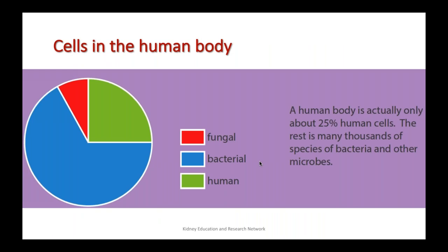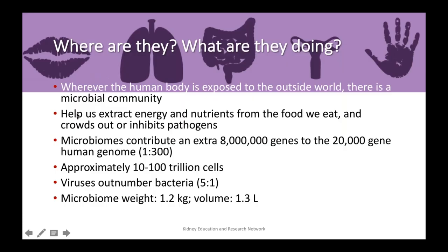It might come as a surprise that a human body is actually about 25% — or in fact much less than 25% — human cells. The rest consists of many thousands of species of bacteria and other microbes. A vast majority of these cells are bacterial cells and a smaller proportion are fungal cells, and the diversity will become even more apparent later on.